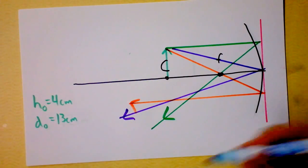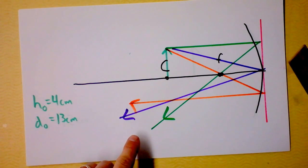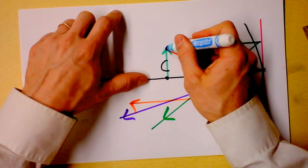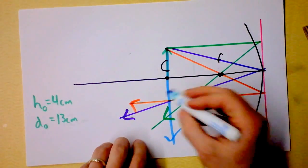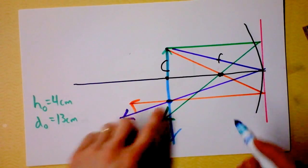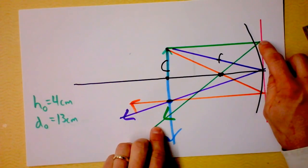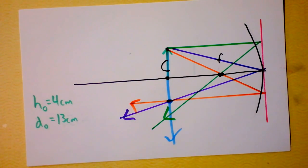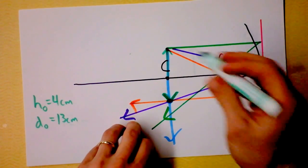An M ray comes in through the middle. Wait — that's the M ray. The C ray goes straight through C and then hits the mirror. So I've got these three rays intersecting right here. I've got one errant P ray that doesn't look right, but if you've got three that intersect at a certain place, that's definitely telling you something. I'm going to say the image is right here where these guys are hitting.